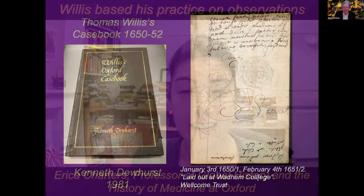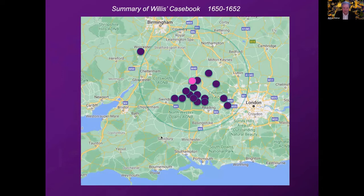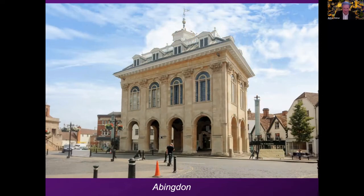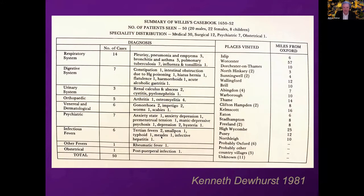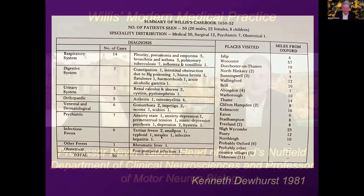So Willis avoided that and started practicing. We know a bit about the history of his early years as a doctor from Kenneth Drewhurst's book, where he published the cases — Willis probably did not intend to publish this. From this book, we know where he practiced in this 50-mile radius across Oxford. We know that he went to Abingdon and surrounding villages, shared a horse with his friends, and we also know the cases he looked at and how much he charged his patients.